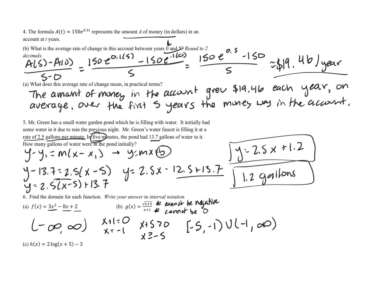For part C, we have a logarithmic function. The domain for log(x) requires the inside to be greater than zero. So x plus 5 must be greater than zero, meaning x must be greater than negative 5. Our domain is the interval from negative 5 to positive infinity, open on the left.